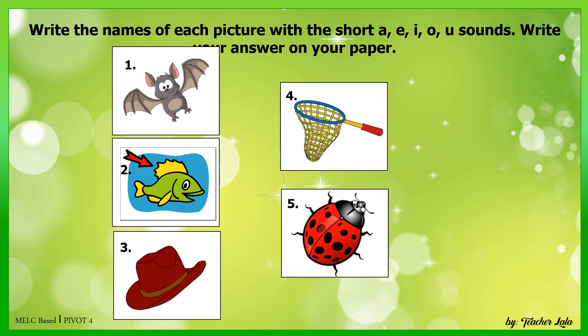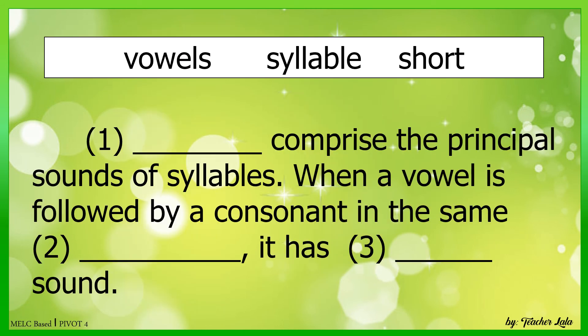For your last activity, write the names of each picture with the short A, E, I, O, and U sounds. Write your answer on your paper. Complete the paragraph by choosing your answer from the box. Write your answer on your paper.